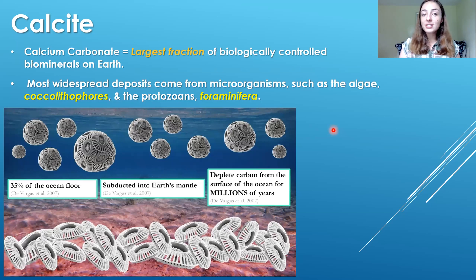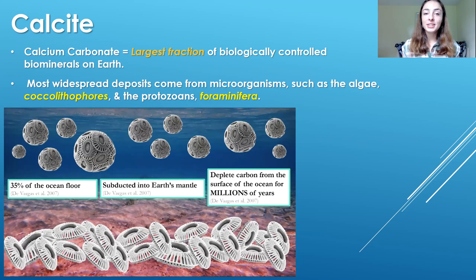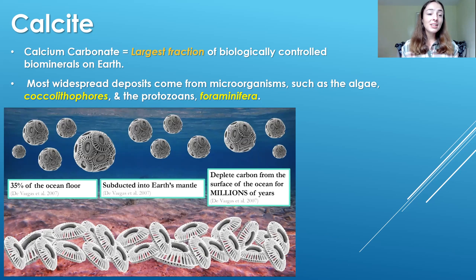Calcium carbonate represents the largest fraction of biologically controlled biominerals on Earth. The most widespread deposits actually come from microorganisms, which you might think is odd because there are also many other things that produce or secrete calcium carbonate skeletons or shells — such as corals, mollusks, sponges, and a lot of invertebrates we've talked about in the paleo bio videos. But the largest deposits are caused by microbes.